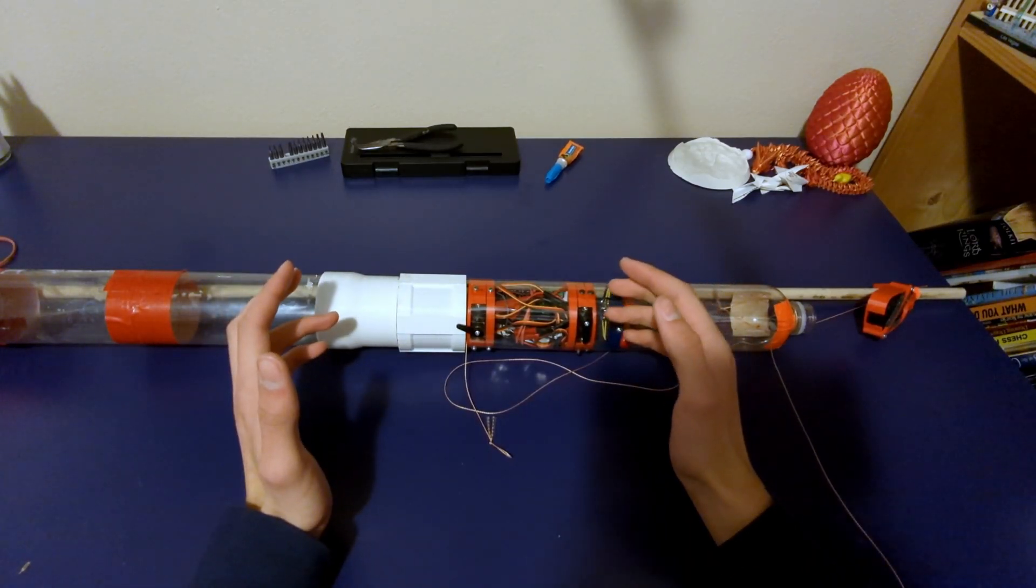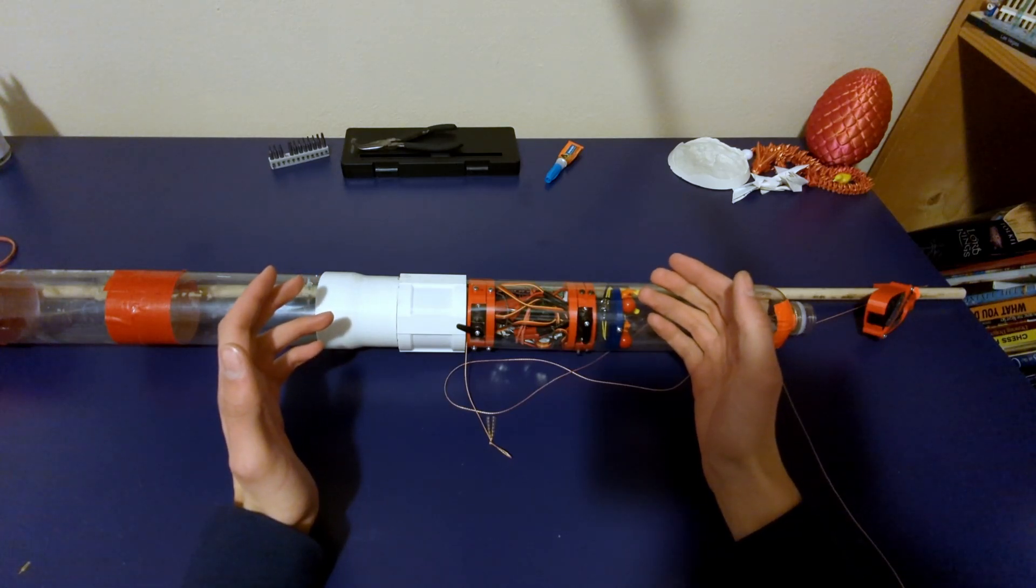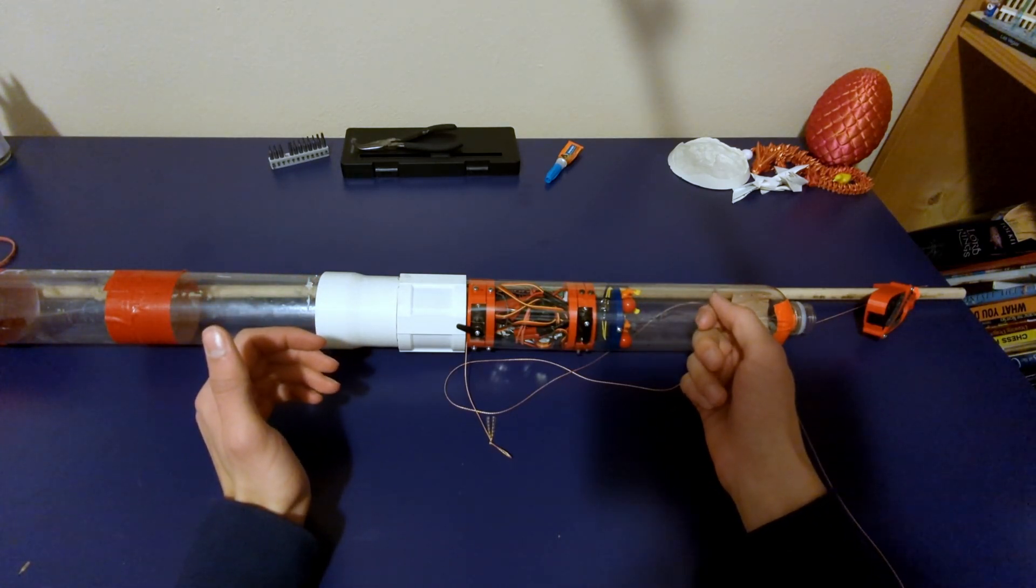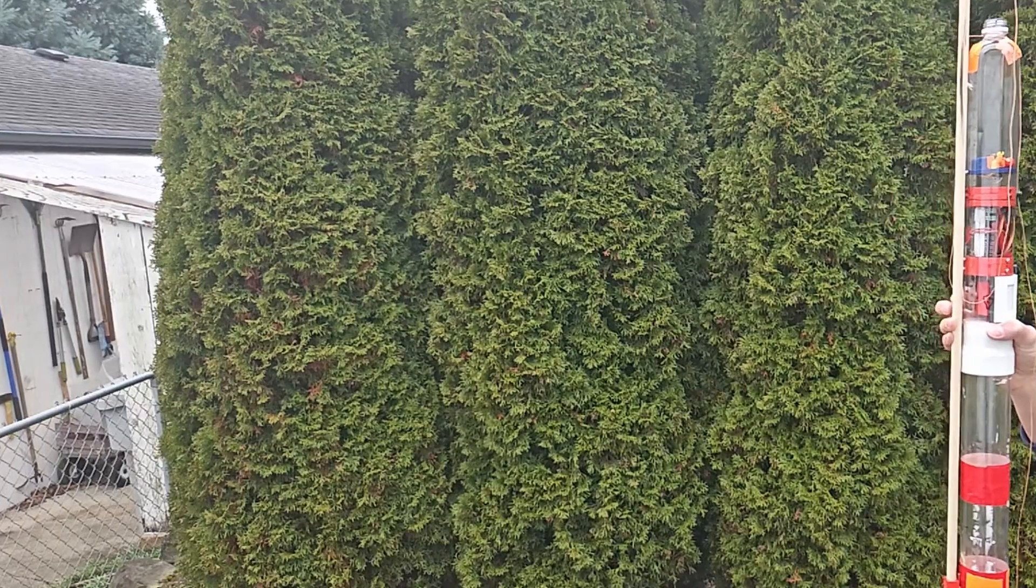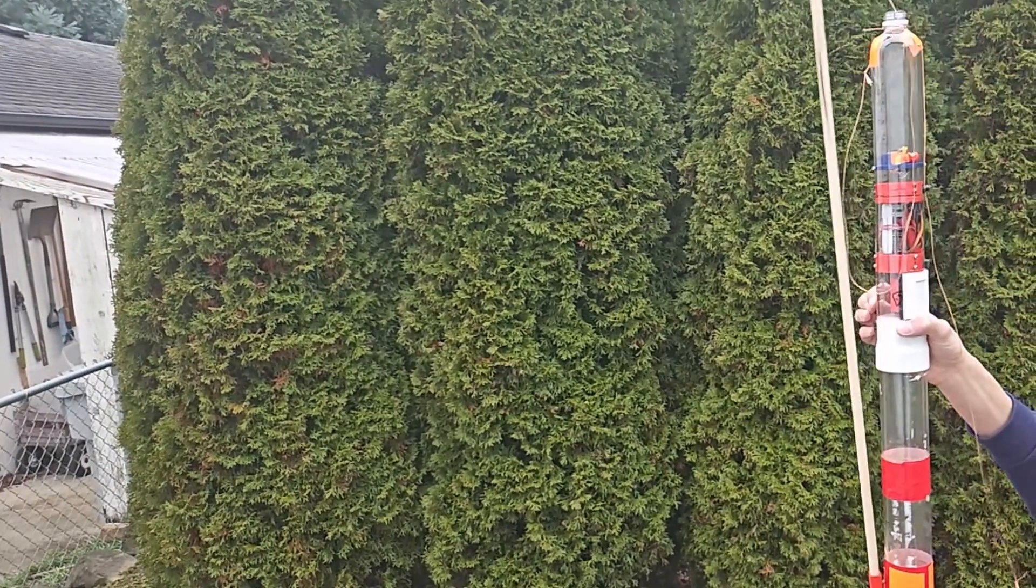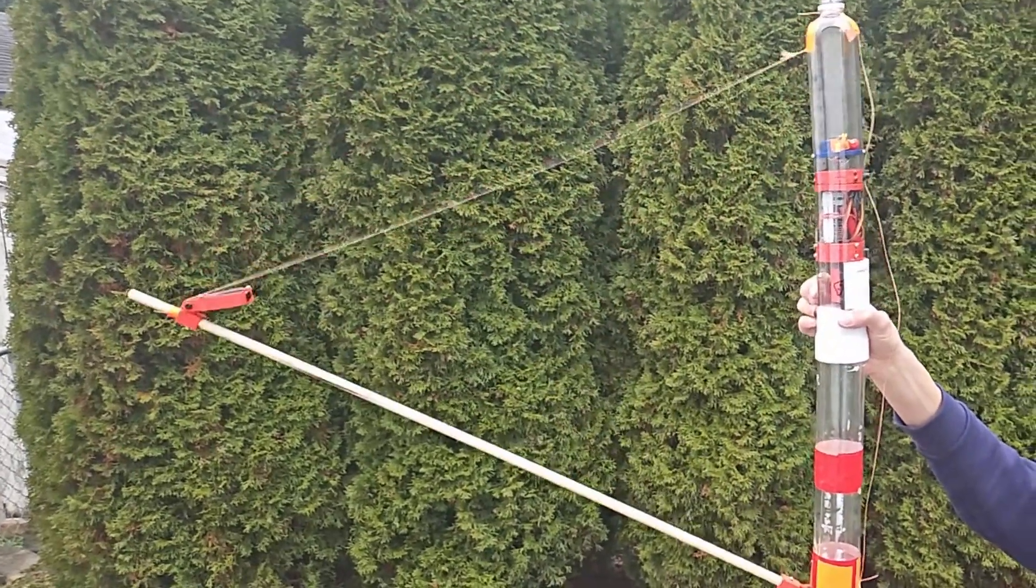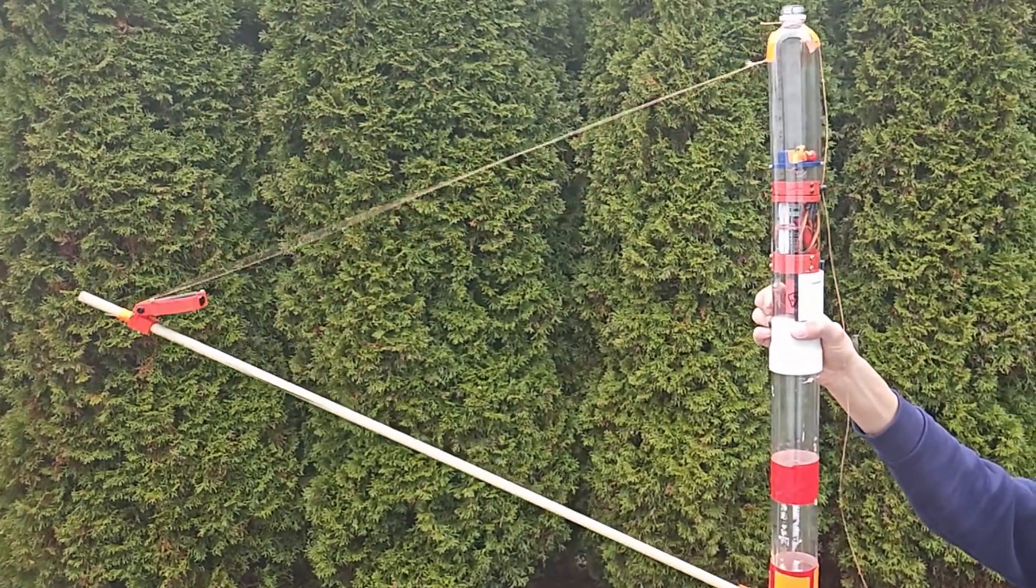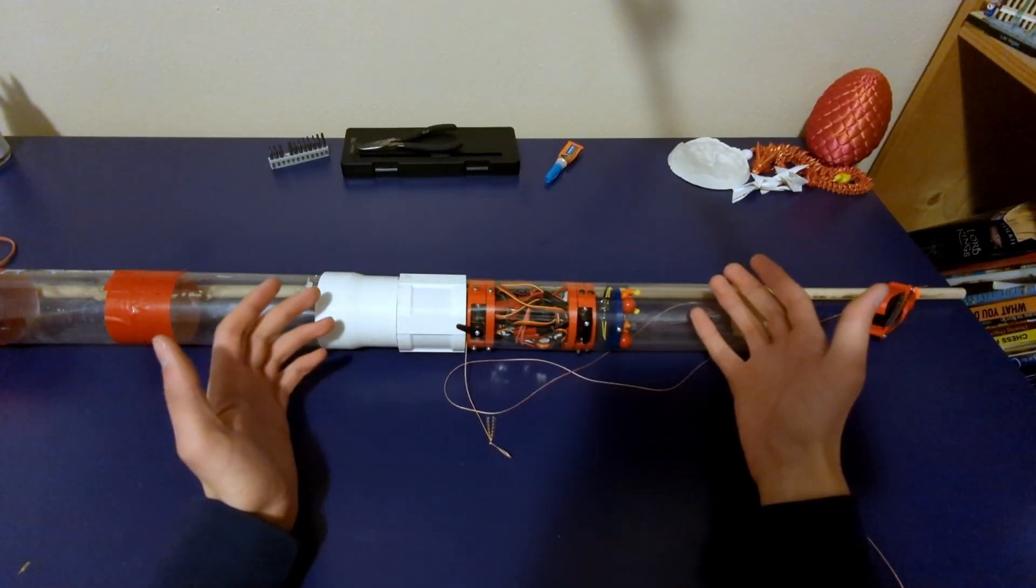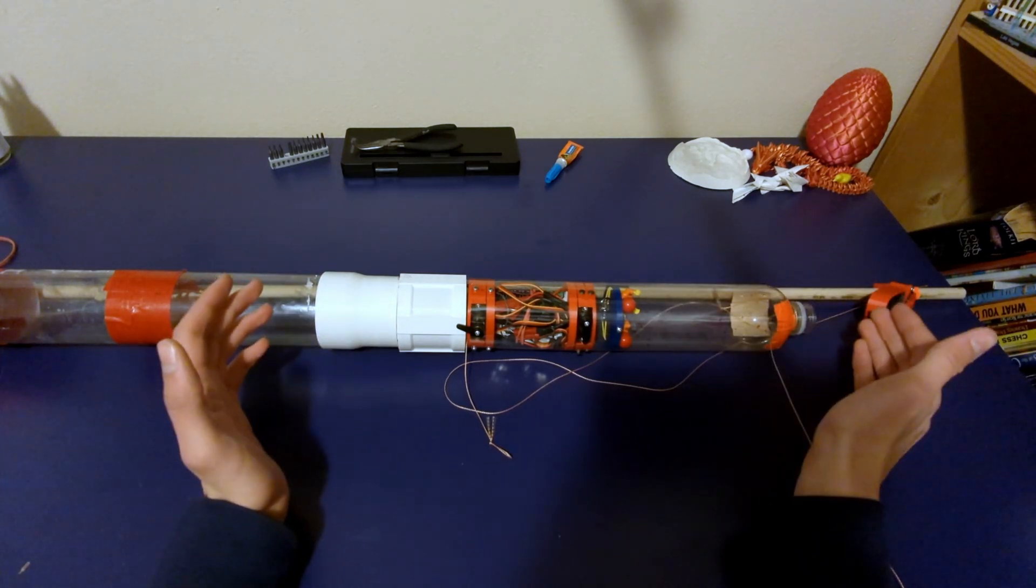A while ago, I saw a video from Air Command Water Rockets where they took a long camera boom and put it on the side of the rocket. It was held in place by a rubber band and was hinged at the bottom so it could deploy during flight and get kind of a third-person selfie-stick view of the rocket. I thought this was really cool and wanted to do it myself. Recently, when I needed to fly this rocket for some avionics testing, I thought it would be a really cool opportunity to fly the selfie-stick.